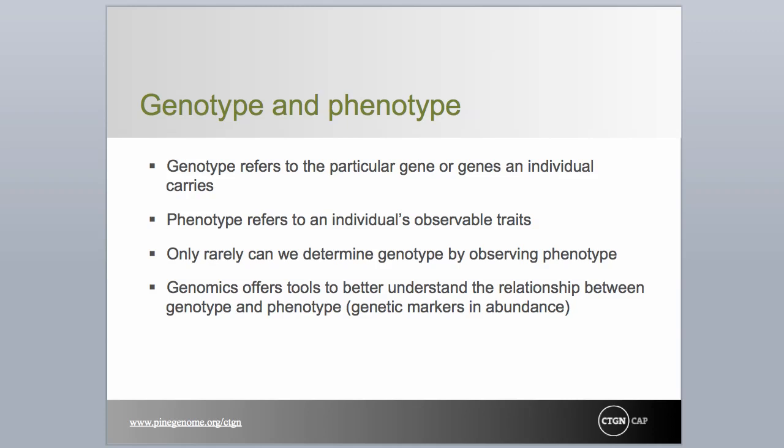The traits may be binomial, like those chosen by Mendel, or metrical, varying continuously. Conditions like those experienced by Mendel, where genotype was reflected by phenotype, are rare, especially in trees. The development of abundant genetic markers for many organisms is opening the door for better understanding the relationship between genotype and phenotype.